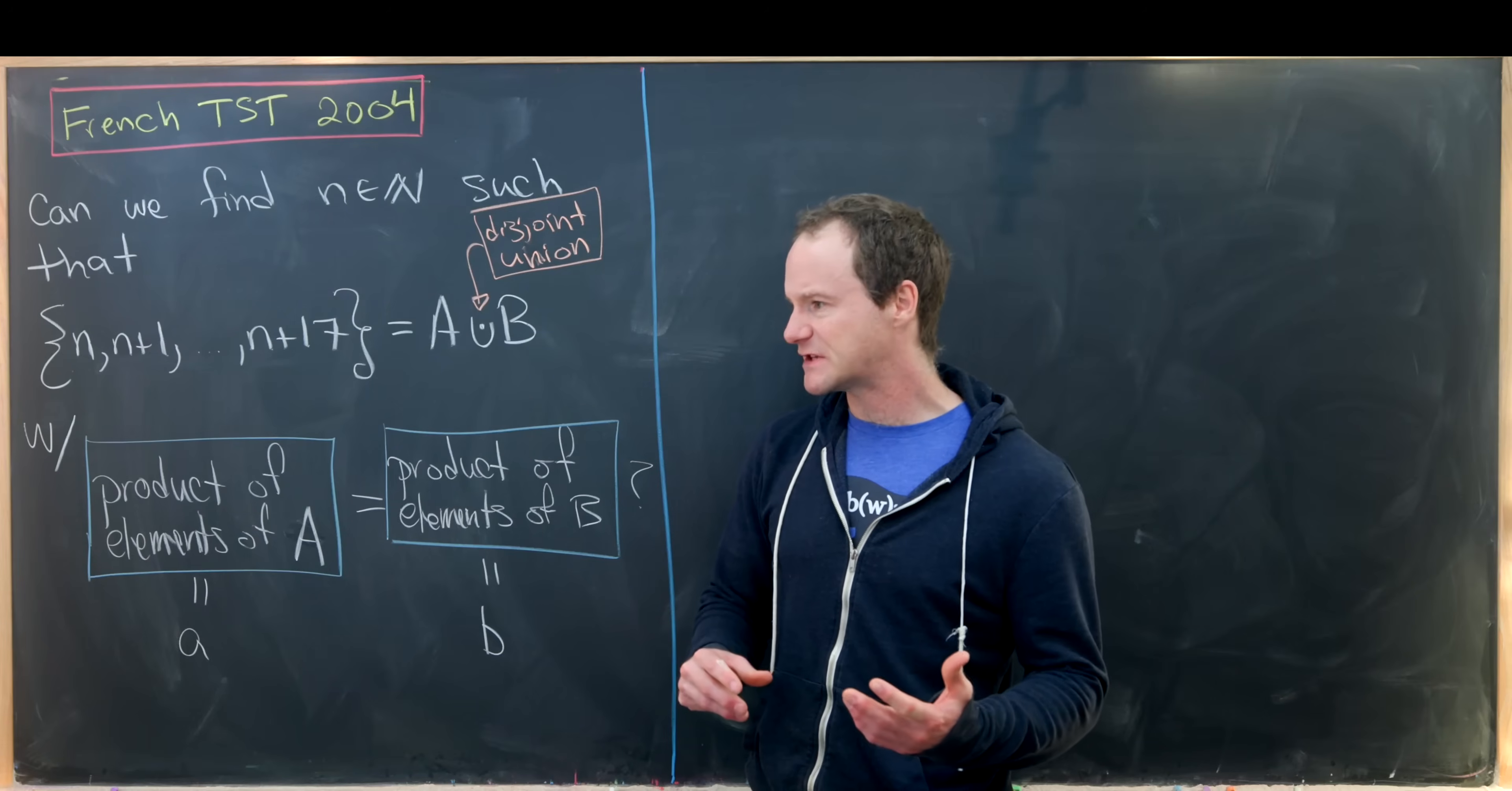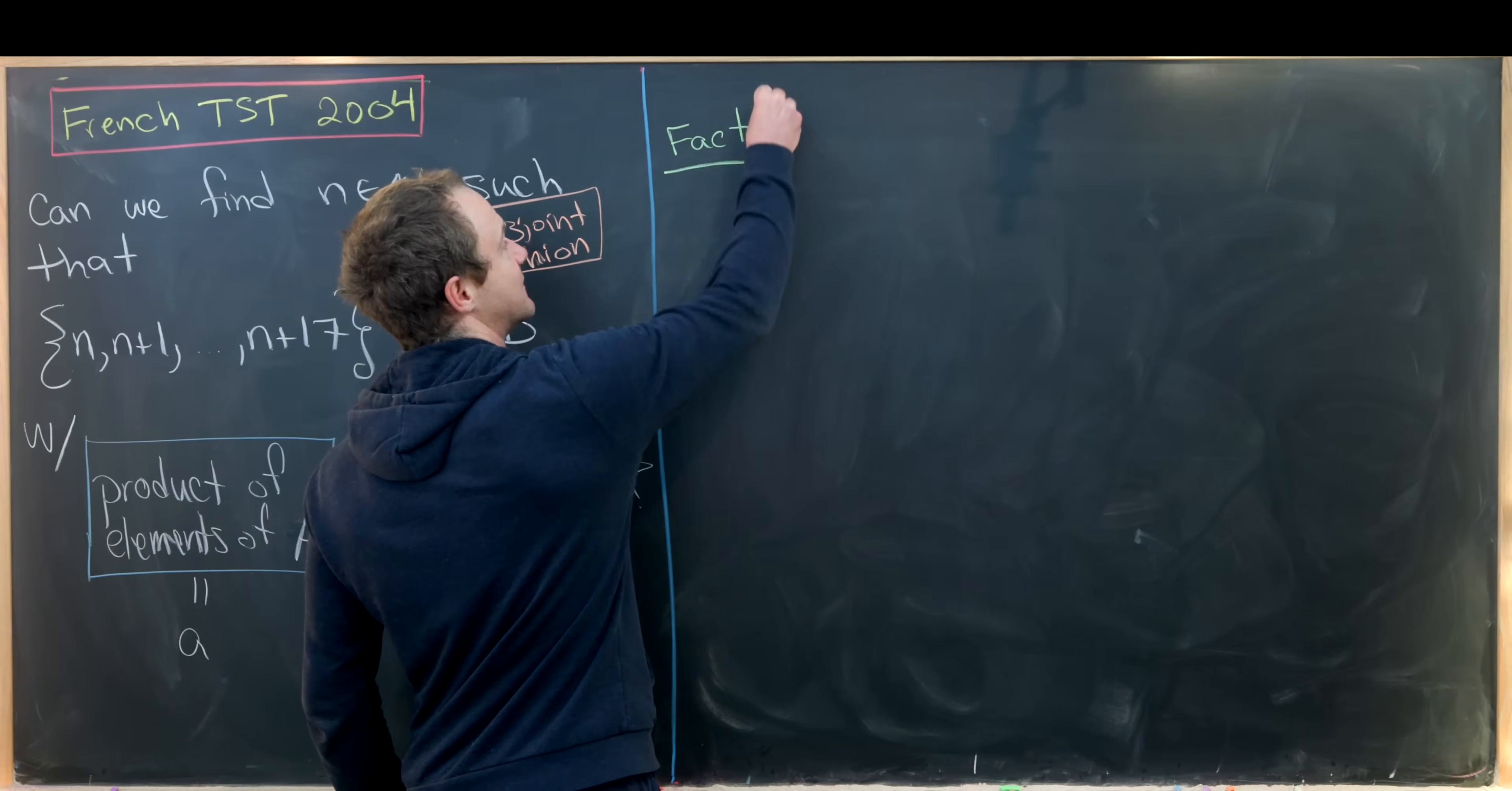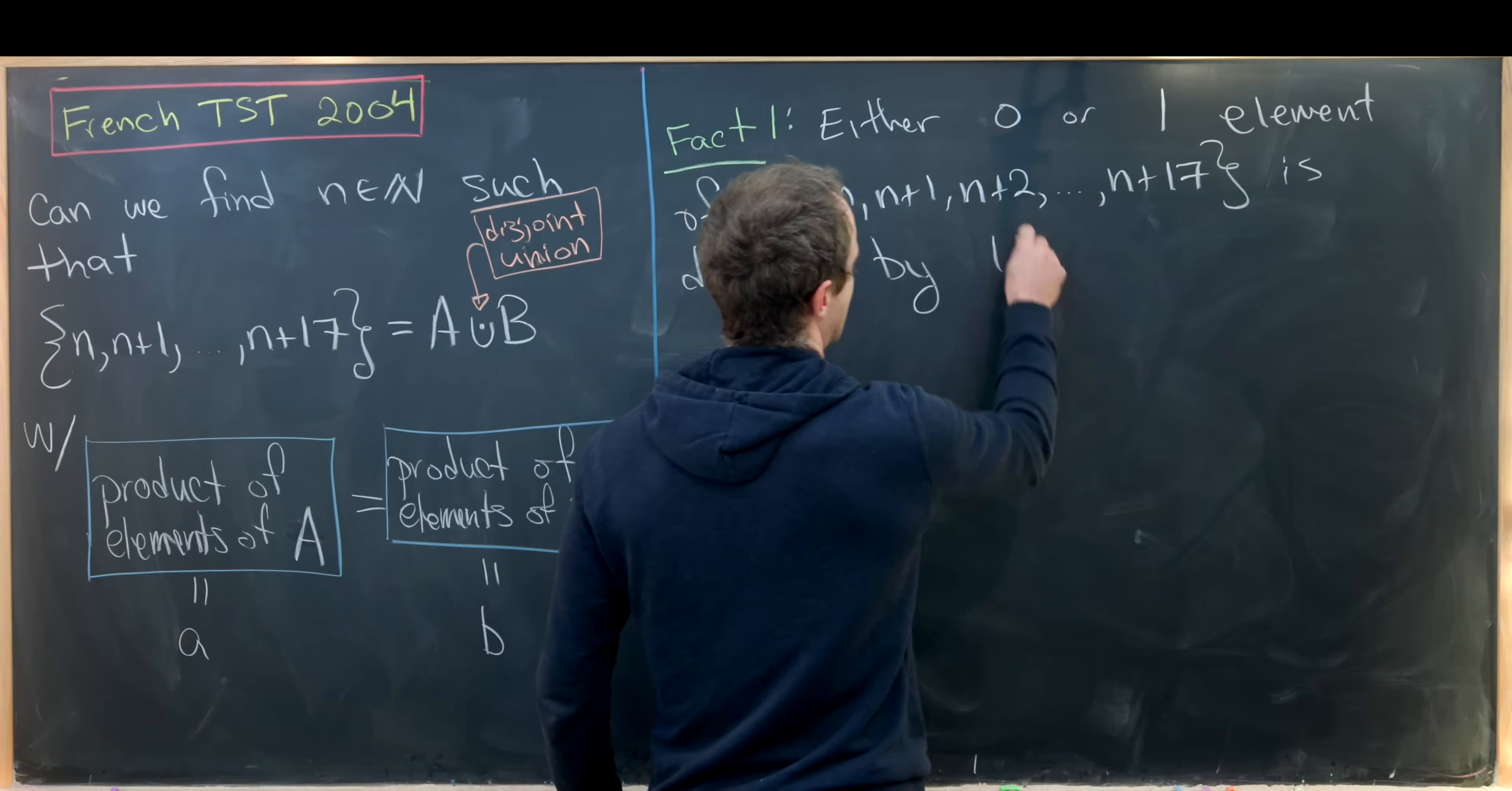I think maybe the best way to look at this is that if we take 17, the next closest prime which is larger is 19. And now we can see that at most one, in other words zero or one elements of the set {n, n+1 up to n+17} is divisible by 19. So let's write that as our first fact. Fact number one: either zero or one element of our set {n, n+1, n+2, all the way up to n+17} is divisible by 19.